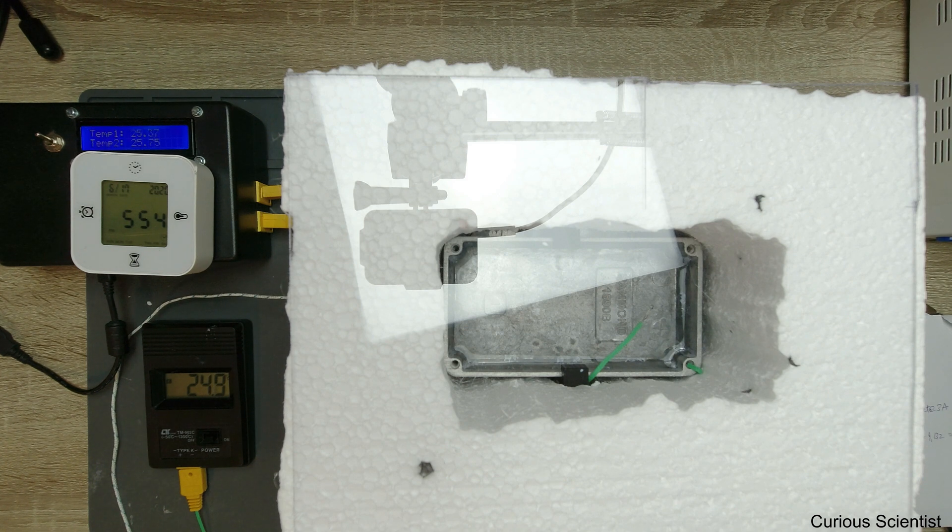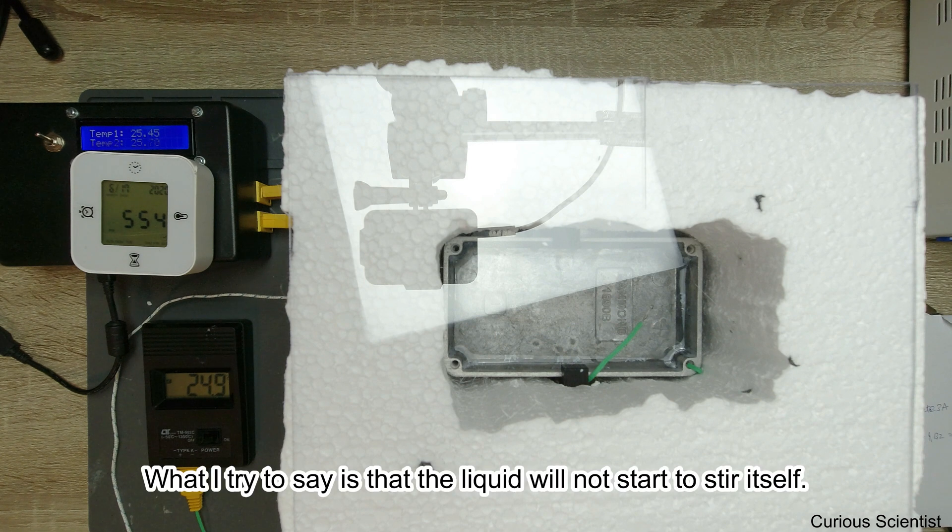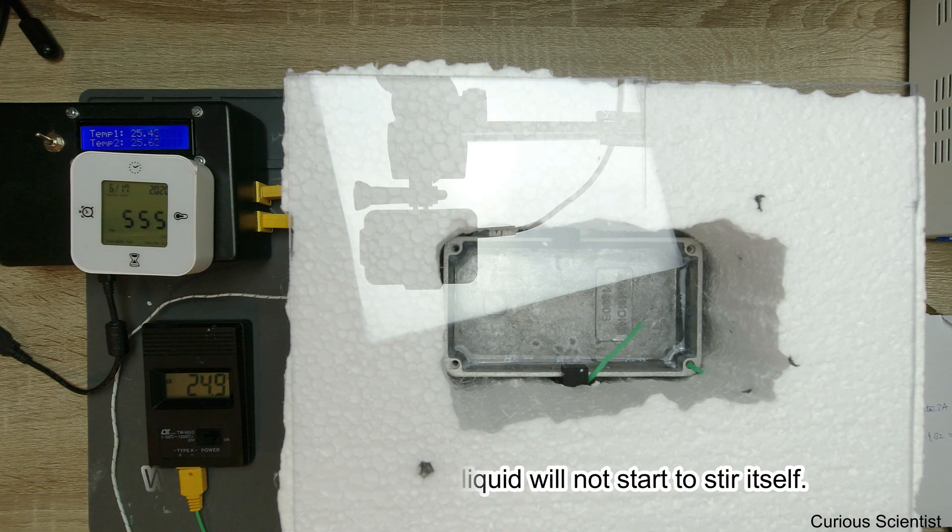I assume that the convection or self-diffusion induced by temperature differences between the bottom layer and the top layer of the water is not a significant factor. So this liquid will not mix itself.